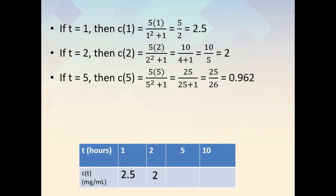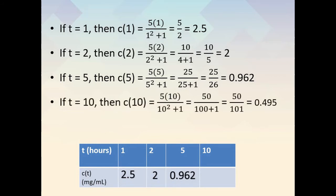If t is equal to 5, then c of 5 is equal to 5 times 5 over 5 squared plus 1, which is equal to 25 over 26, which is equal to 0.962. If t is equal to 10, then c of 10 is equal to 5 times 10 over 10 squared plus 1, which is equal to 50 over 101, which is equal to 0.495 milligrams per milliliter.